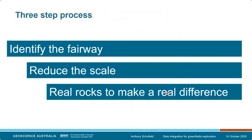In order to identify where you might have a new mineral province undercover in the Tennant Creek to Mount Isa region, we're going to follow a three-step process. Step one is to identify a fairway. Step two is to reduce the scale — go from broader to something more defined. Step three is to use real rocks to make a real difference. We'll be looking at finer and finer detail using a whole range of different data sets.